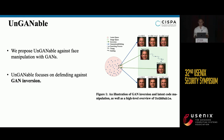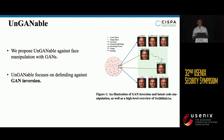We propose UnGANnable, a defense against facial manipulation using GANs. UnGANnable focuses on defending against GAN inversion. Once an image is successfully inverted to its accurate latent code, it is extremely hard to defend the following manipulation step, as the adversary can essentially perform any operation on the latent code. Therefore, the most effective defense is to reduce the performance of GAN inversion, so the adversary can only obtain an inaccurate latent code, meaning the following manipulation step will not achieve the ideal result.